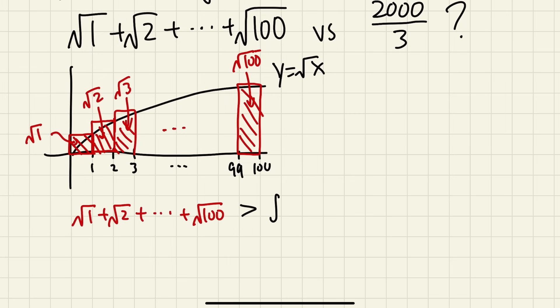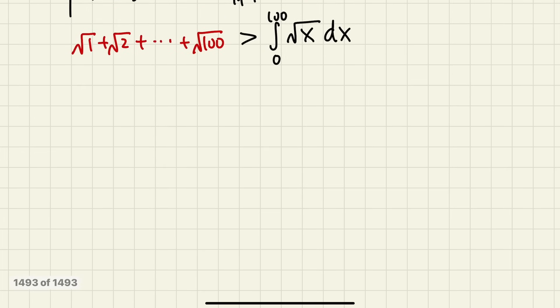Well, by the area argument, it has to be greater than the area under the curve, which we can compute with integration: zero to a hundred, and then we just have to integrate square root of x. That's the idea. Now let's go ahead and work this out real quick. Square root of x is the same as x to the one-half power, so let's add one and then divide by the new power, which is 2 over 3.